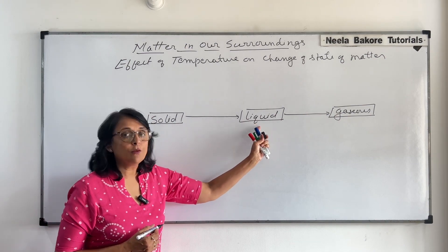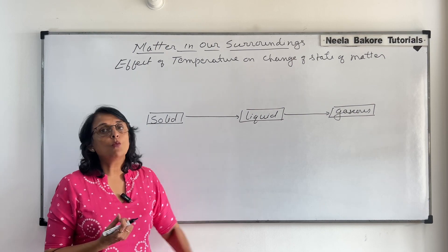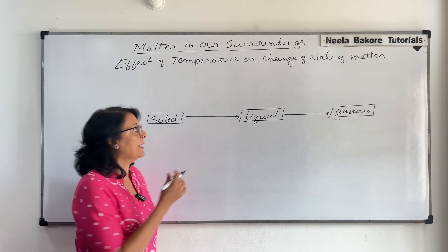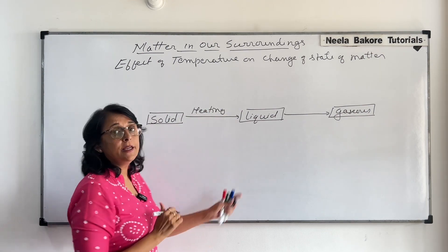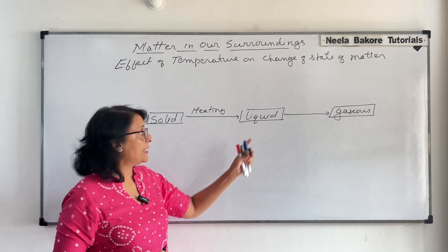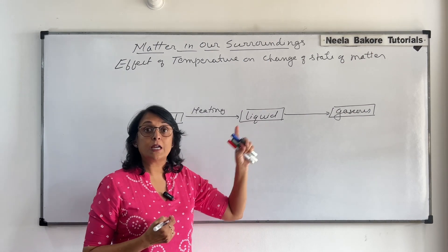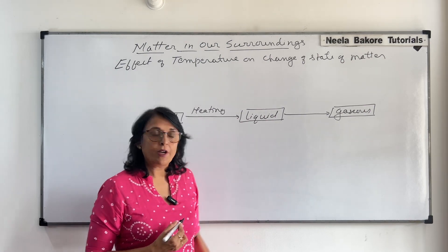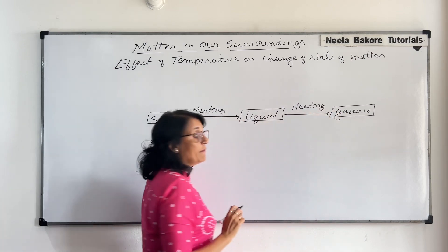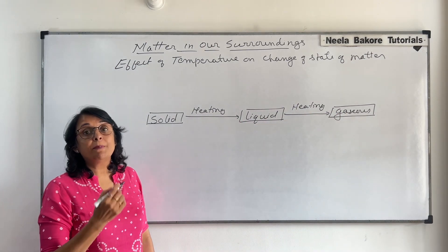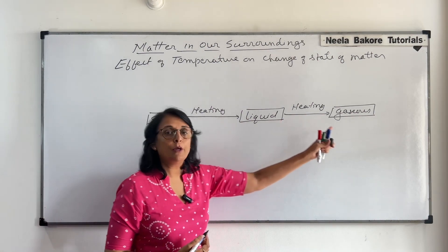Solid is to be converted into liquid, or ice is to be converted into liquid water. What do we need to do? We have to heat it. On heating, the solid changes into liquid state. If we take water and start heating it, water starts to boil and changes into water vapor. So, if we apply heat or increase the temperature, solid changes to liquid and liquid to gaseous state.